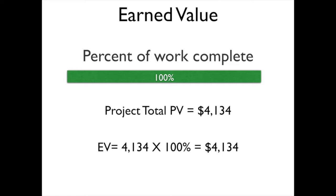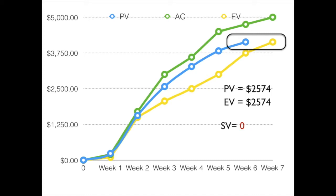So, even if this project gets done six months late, or a year late, whenever it is completed, the earned value is going to essentially equal the planned value — because we're going to take the planned value, multiply that by 100%, and come up with, in this case, $4,134. So, we could very well have a situation where our project gets done not in week six but in week seven, and we will have a scheduling variance at that time of zero.